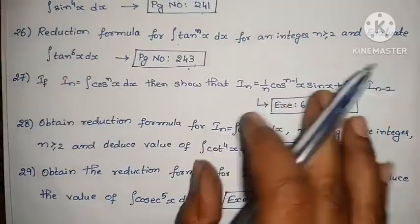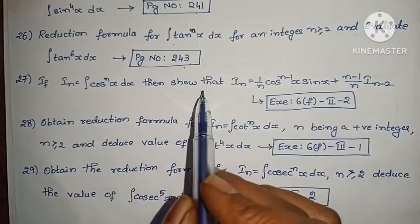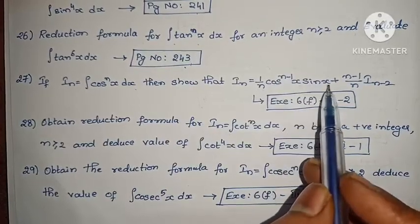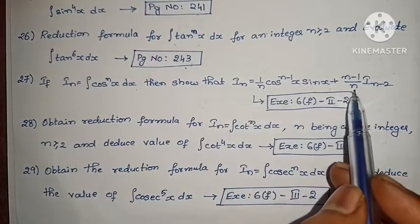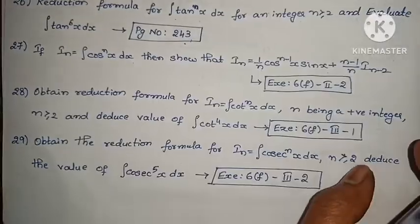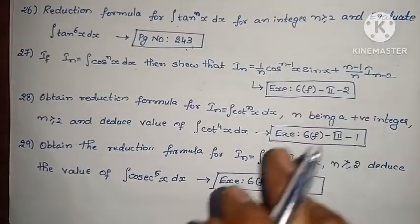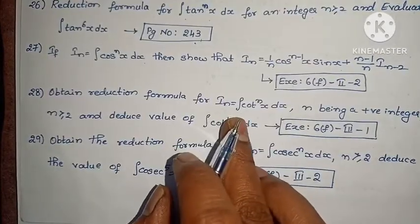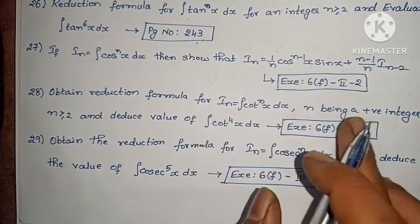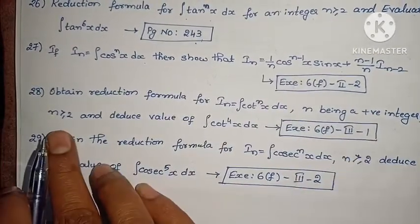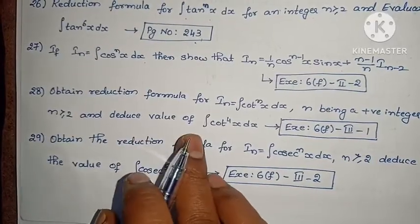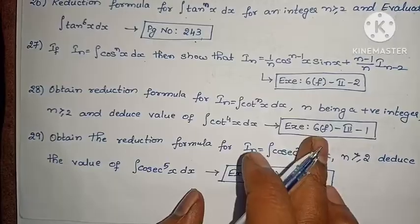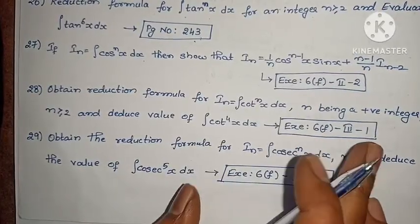If Iₙ = integral of cosⁿx dx, show that Iₙ = (1/n)·cosⁿ⁻¹x · sin x + (n−1)/n · Iₙ₋₂, exercise 6f, Roman numeral 2, 2nd problem. Next: obtain the reduction formula for Iₙ = integral of cosⁿx dx (n ≥ 2) and deduce the value of integral of cos⁴x dx, exercise 6f, Roman numeral 3, 1st problem.